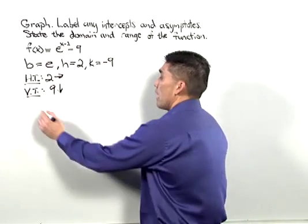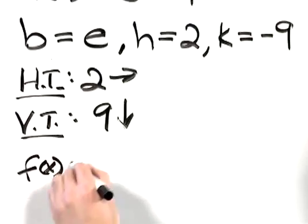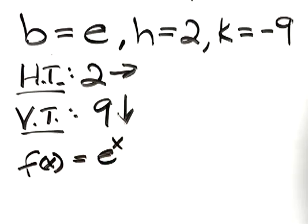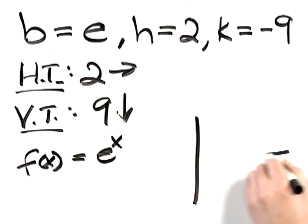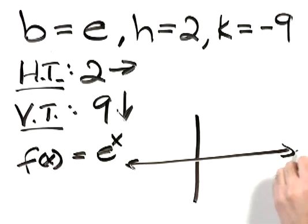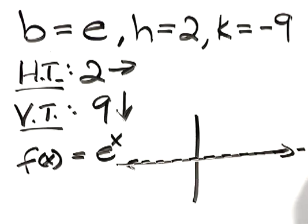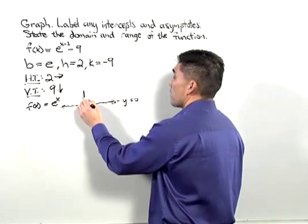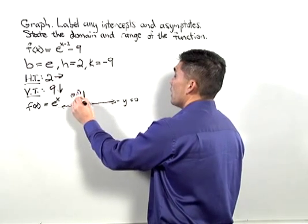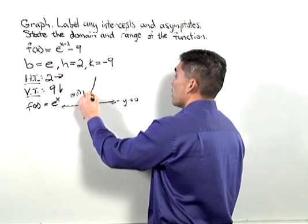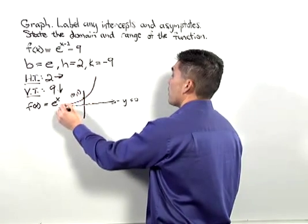The general function, f of x equals e to the x, takes this shape. It has an asymptote at y equals 0, has the point 0 comma 1, and a curve that increases as we go from left to right.